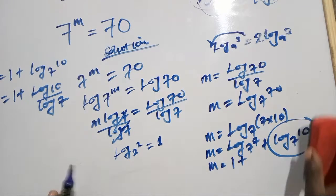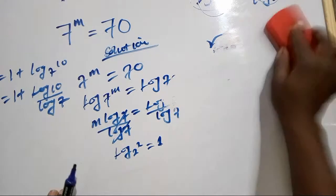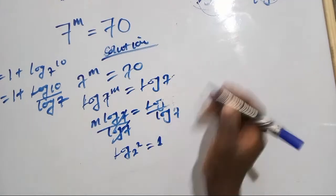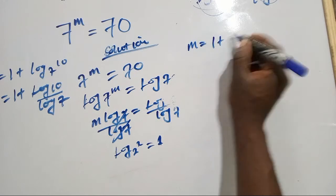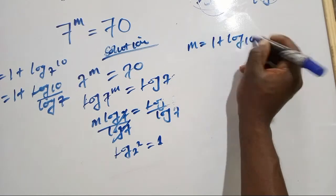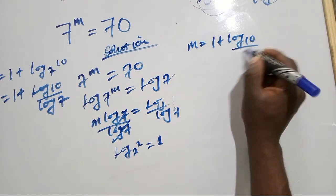Let's create some space here. So we have m equals 1 plus log 10 over log 7.